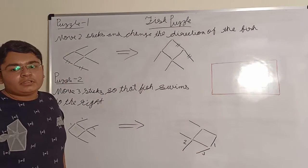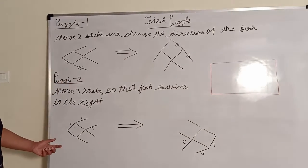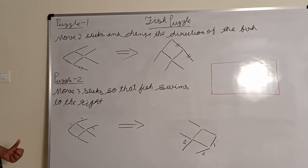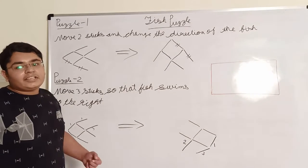So, the puzzle is solved. You can see that in the question, this fish is swimming to the left side. And in the answer, you can see, the fish is swimming to the right side.